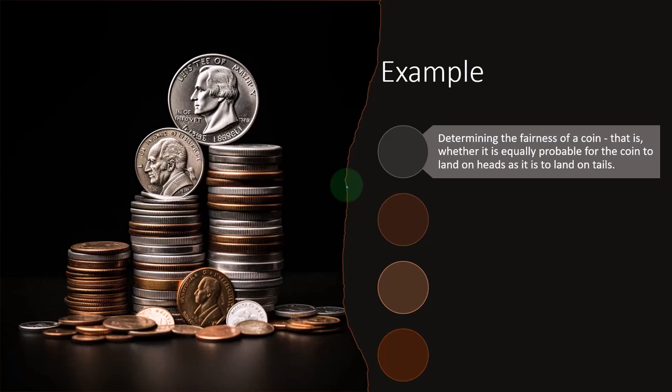Then we're going to get the preponderance of evidence. And if the evidence is such that it's going to be different than that, showing that it's not fair, then we're going to have to change our assumption.